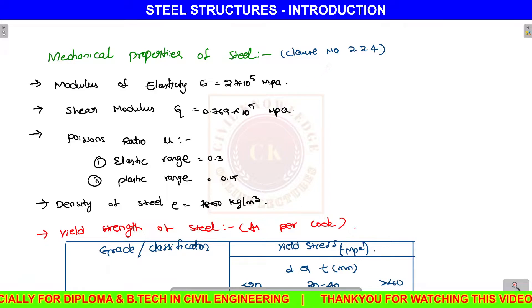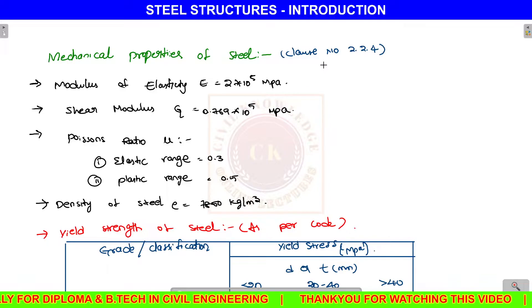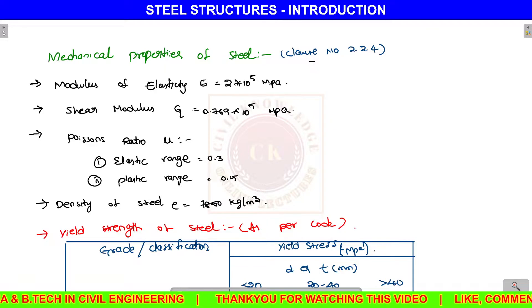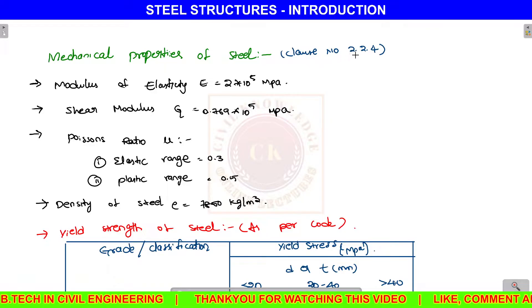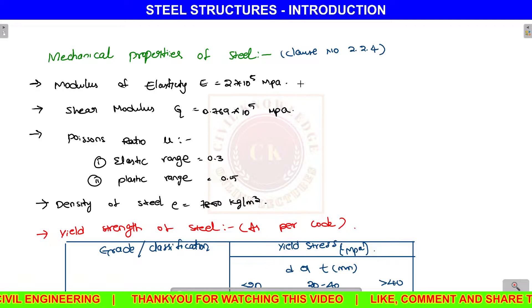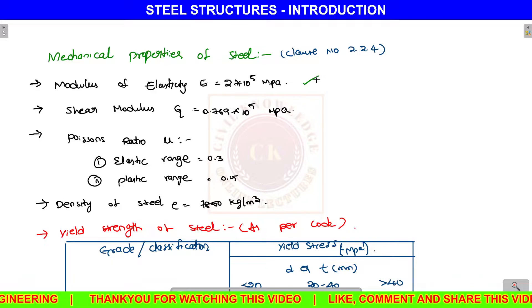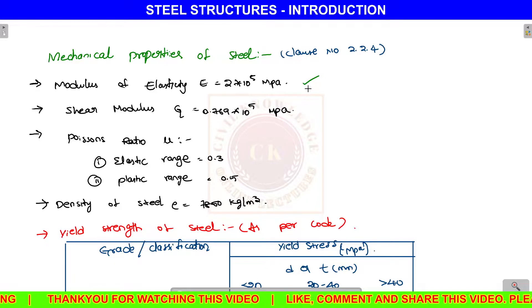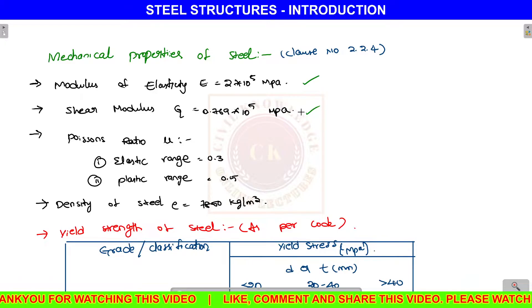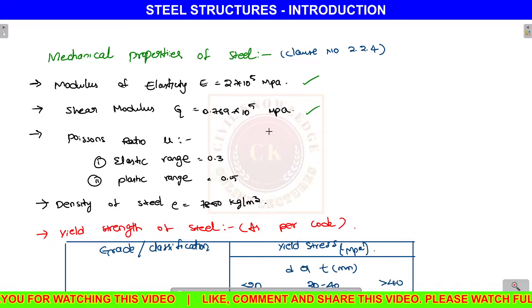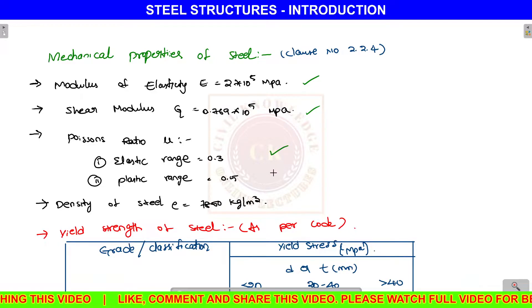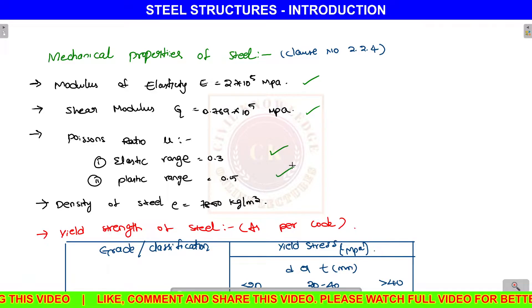I have stated in the code book, class number 2.2.4, the properties are only mentioned. The first property is modulus of elasticity of steel, which is 2×10⁵ MPa, and shear modulus. Poisson's ratio for elastic range is 0.3 and for plastic range is 0.5.